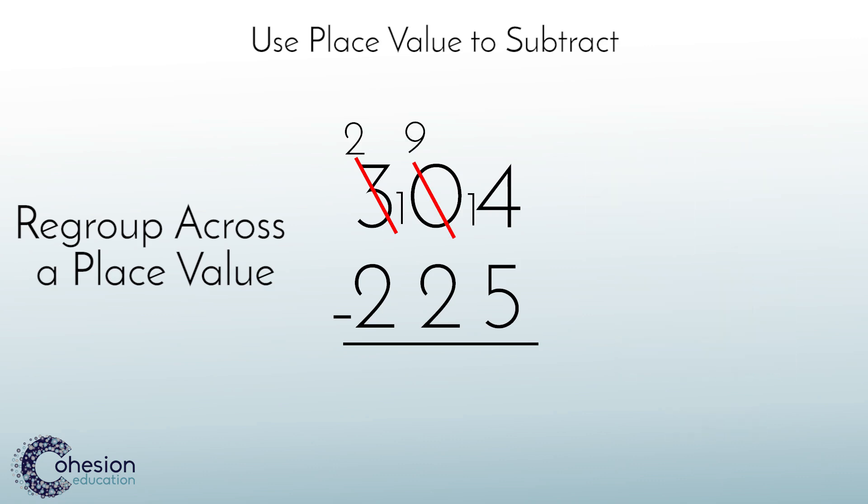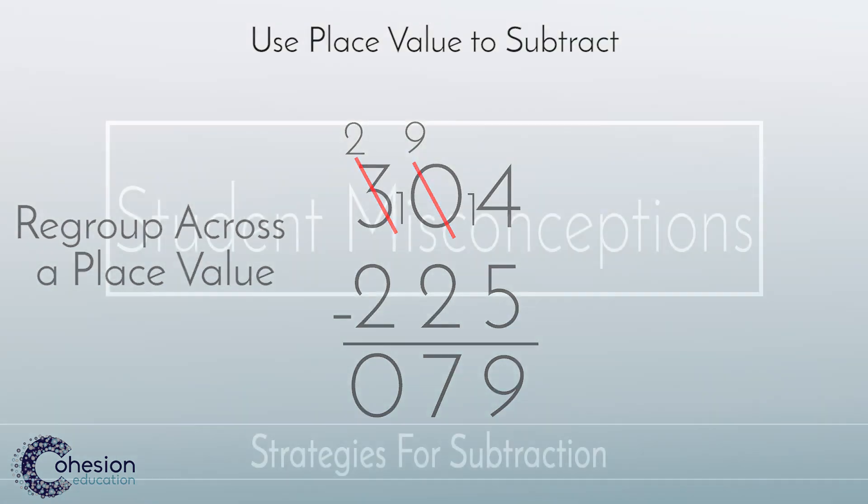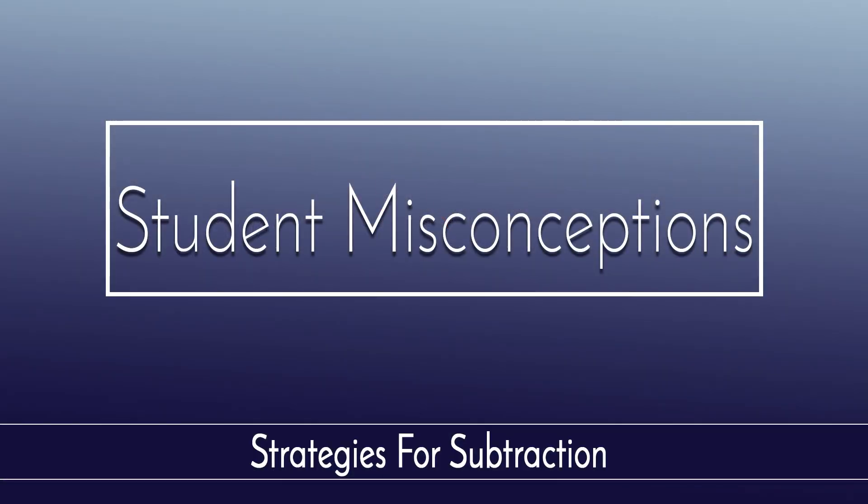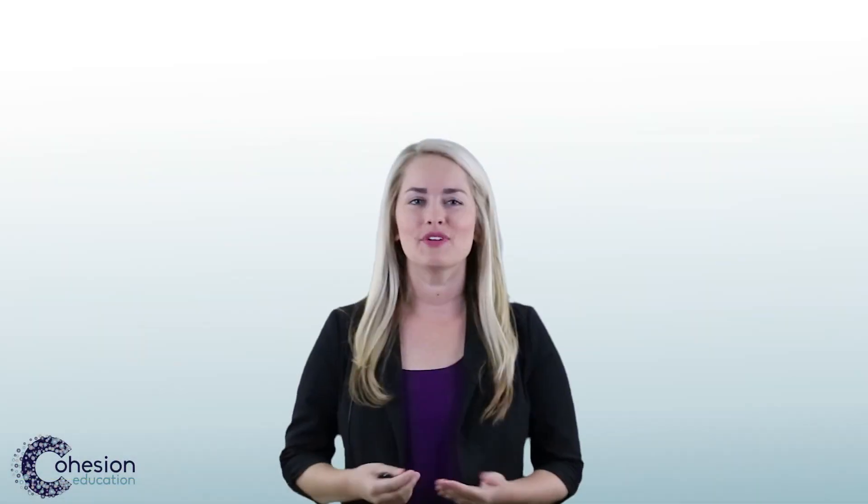So, now we have fourteen ones minus five ones, which equals nine. Nine minus two equals seven. Two minus two equals zero. So, 304 minus 225 equals 79. And it does. So, our answer is correct.